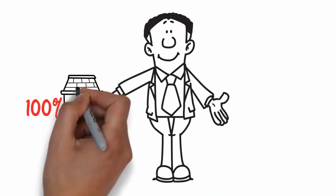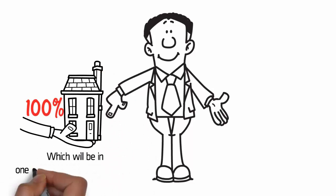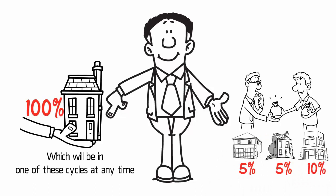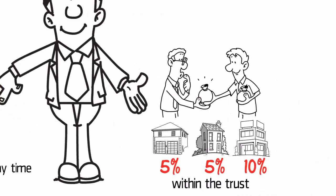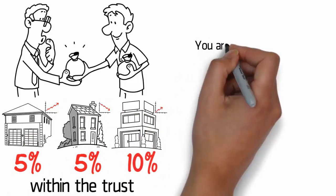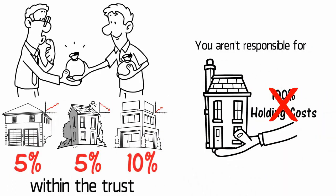Rather than owning 100% of one property, which will be in one of these cycles at any time, you buy units in the unit trust and you own a portion of multiple properties within the trust. This means that you can take advantage of multiple property cycles at the same time, and you aren't responsible for all the holding costs of an individual property.